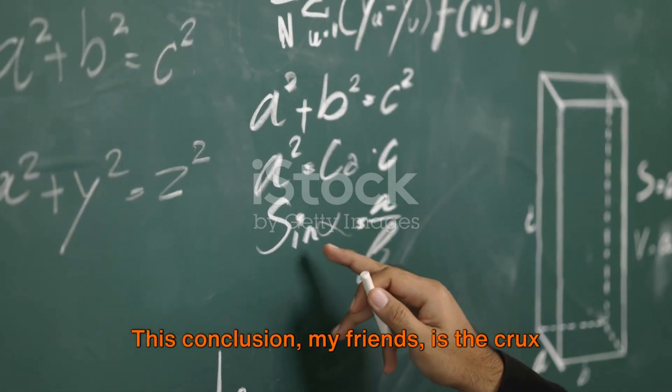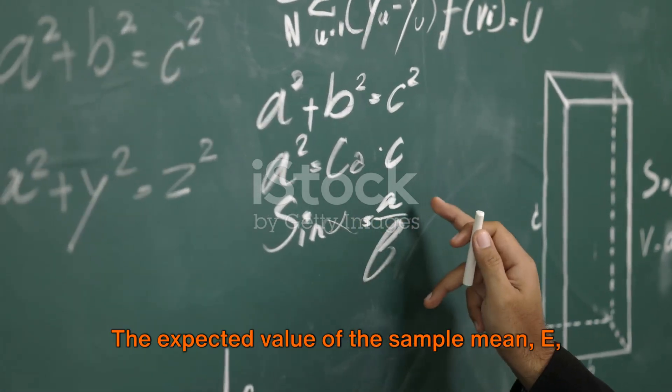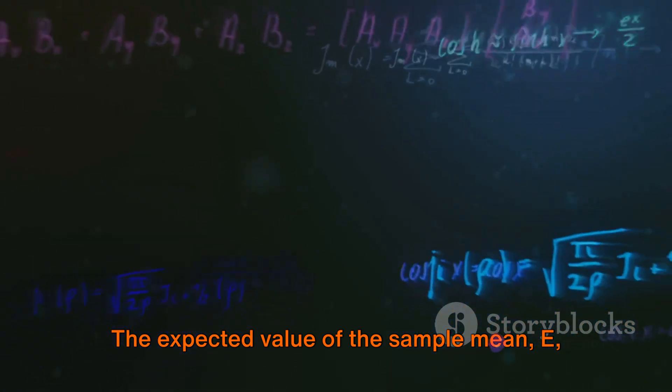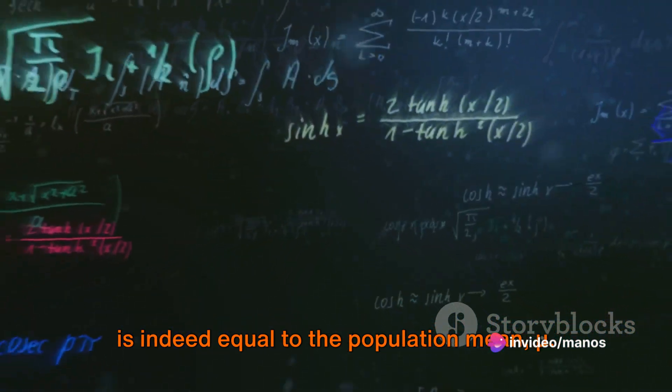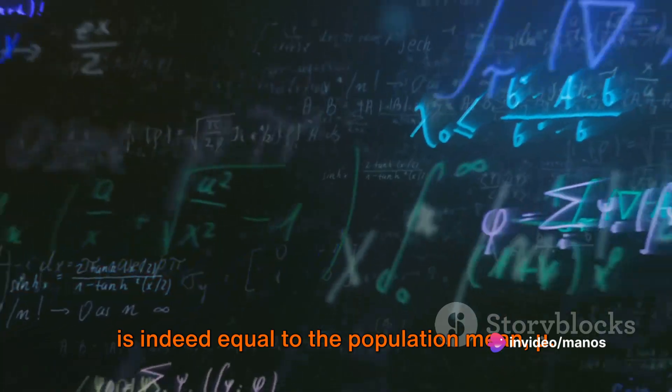This conclusion, my friends, is the crux of our exploration. The expected value of the sample mean E(x bar) is indeed equal to the population mean mu.